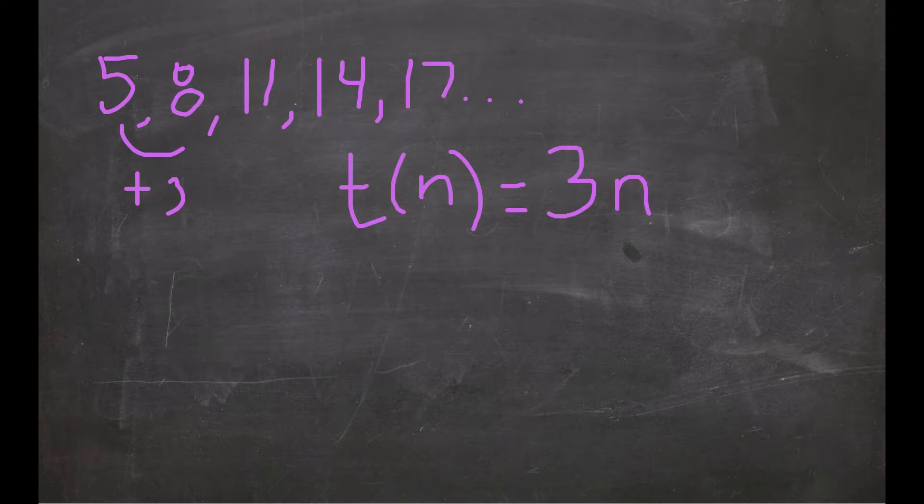But then we're going to add to that our zeroth term. Remember that if 5 is our first term right here, our zeroth term would be one before that. So working backwards,